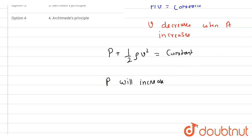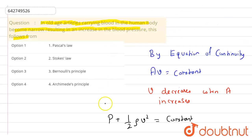So this is according to Bernoulli's theorem - when the blood flows from narrower arteries to wider arteries, the area will increase, area increase v decrease, when v decrease by Bernoulli's theorem pressure will increase. So answer of this question is option three, that is Bernoulli's principle. This is about this question, thank you for watching.